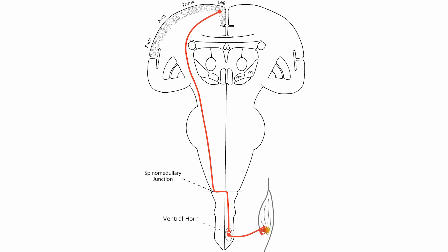Lower motor neuron diseases also present with flaccidity and severe atrophy of the muscle due to the loss of trophic factors coming from the lower motor neurons.